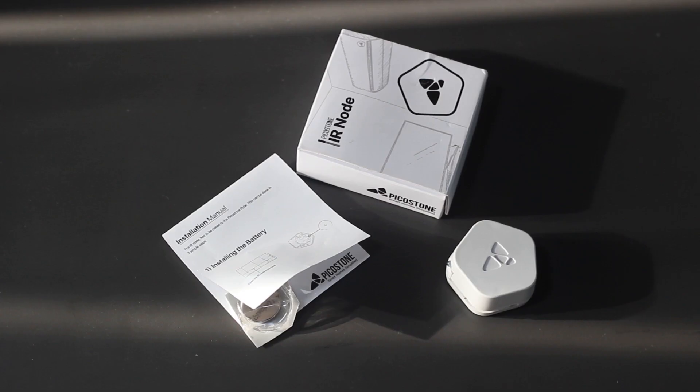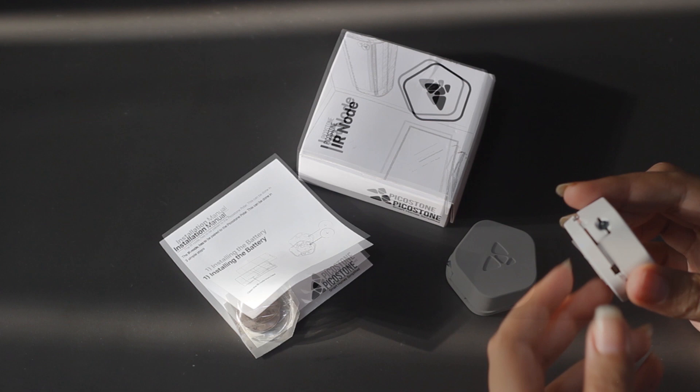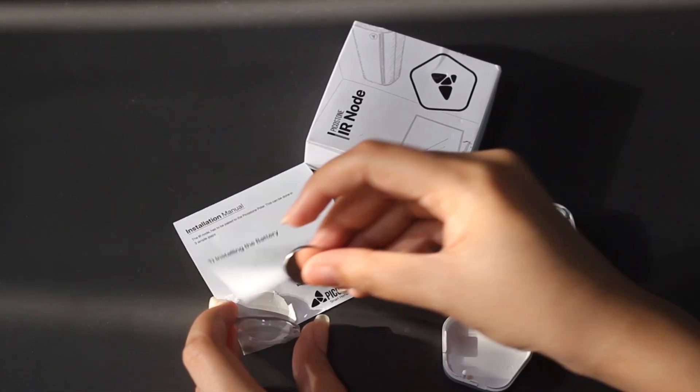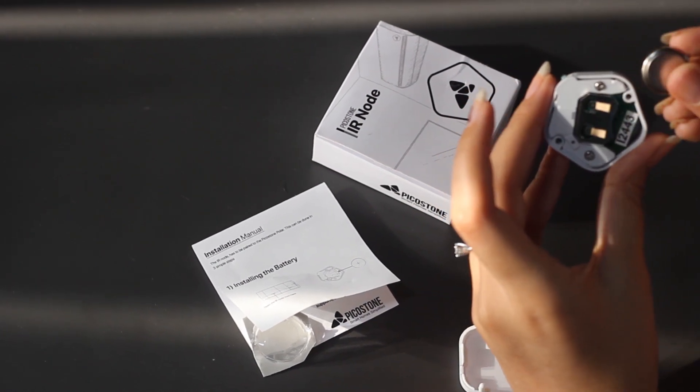Let's begin with setting up your node. Since a node is battery powered, you need to insert the coin cell battery into the node. For that, open the back of the node. You will find a coin cell battery provided with the node. Insert the coin cell battery flat side upwards into the node.